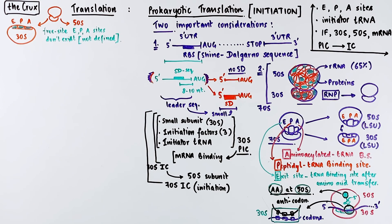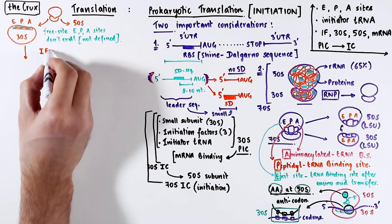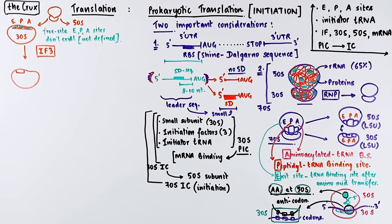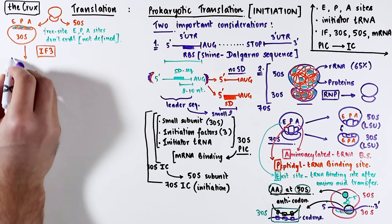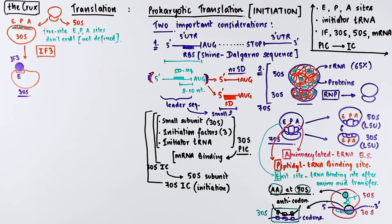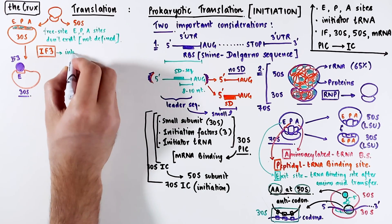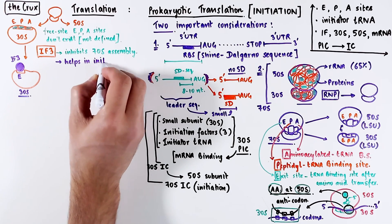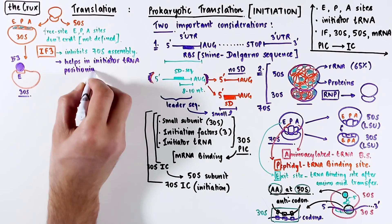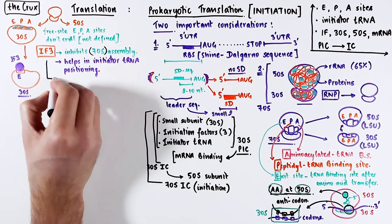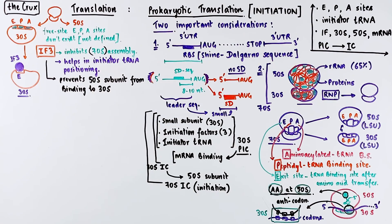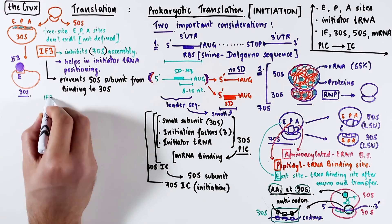In the next stage, the free subunit gets bound by initiation factor 3. IF3 binds at one end of the 30S subunit, and the position where it binds becomes the E site. IF3 has many other important functions: it makes sure that the 70S ribosome does not form prematurely, meaning it prevents the binding of the 50S subunit to the small subunit. It also helps in the positioning of the special initiator tRNA. Perhaps the most important point is that IF3 binding defines the exit site on the ribosome.